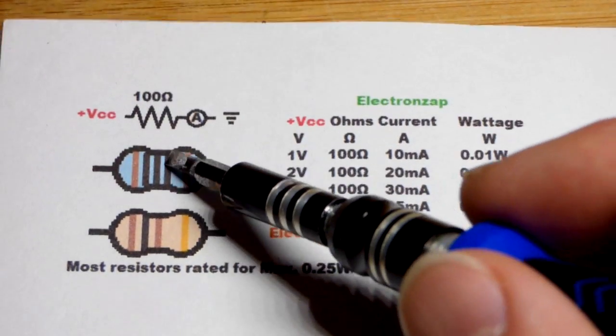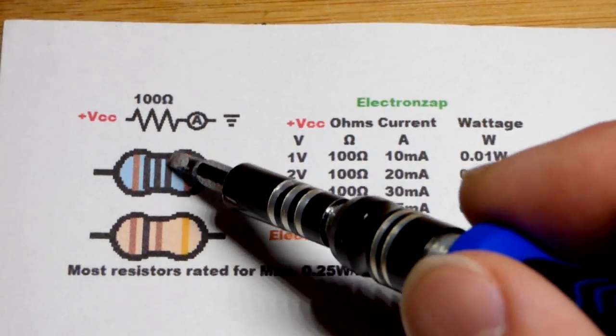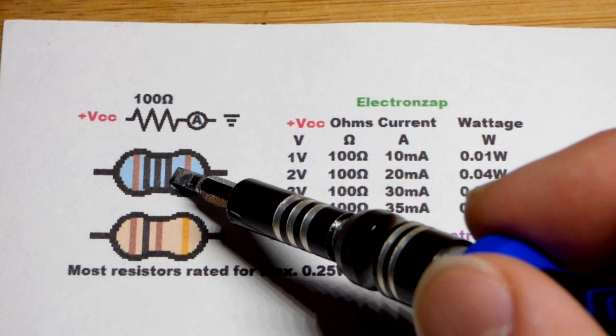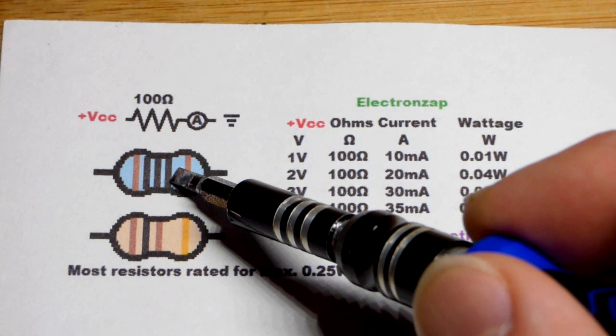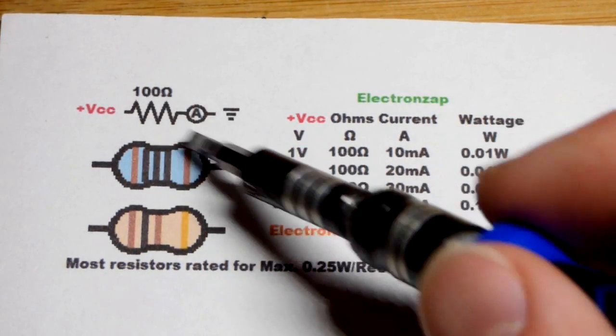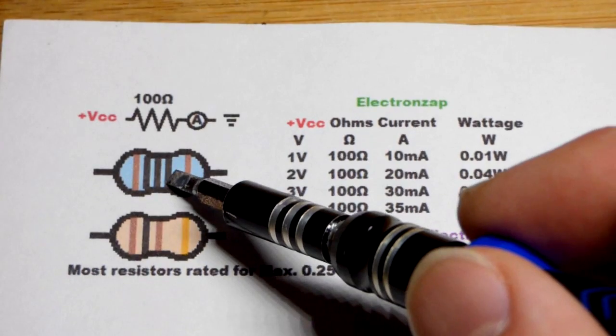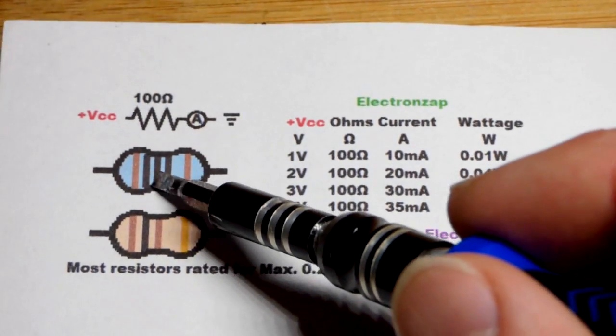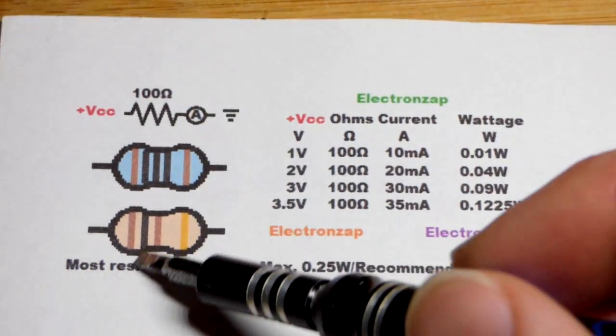So 100. But we have the multiplier here. If it's black, it's easiest to think of it as zero zeros - there's no more zeros afterwards, you just have your number. Technically it's times 1. So 100 times 1 is 100, a 100 ohm resistor.